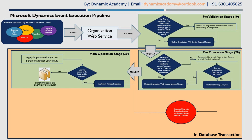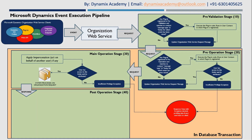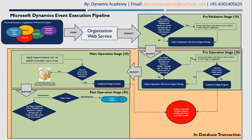If the user has all required access, the system processes the organization request message and generates a response from it. The main operation stage is where the platform processes the organization web service request and generates a response. That response message is then passed to the post-operation stage. Here, the platform first checks the type of the plugin: if the plugin is asynchronous, the response message is passed to the asynchronous queue, a system job is created in the Dynamics 365 instance, and that job is handled by the asynchronous service.